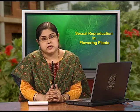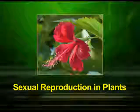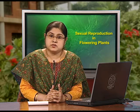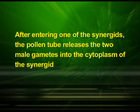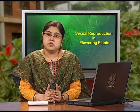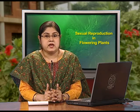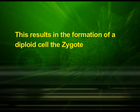Now let us discuss the process of double fertilization. After entering one of the synergids, the pollen tube releases the two male gametes into the cytoplasm of the synergid. One of the male gametes moves towards the egg cell and fuses with its nucleus, completing the syngamy. This results in the formation of a diploid cell — the zygote.